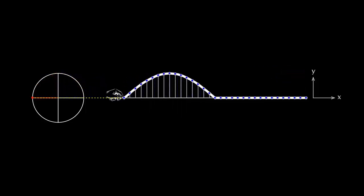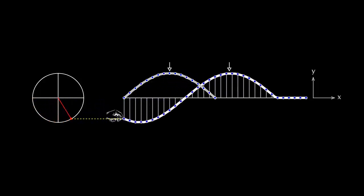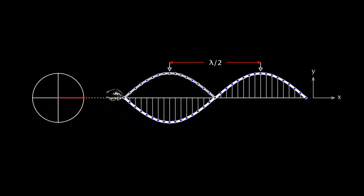As the left end completes half an oscillation, the rope has the shape shown. Another half oscillation later, the shape has moved by lambda/2. At the earlier crest position, we now have a trough, and the crest has advanced by lambda/2 along the rope.